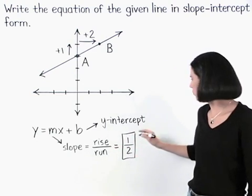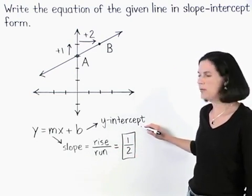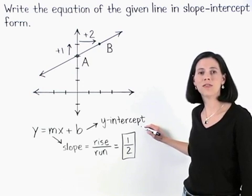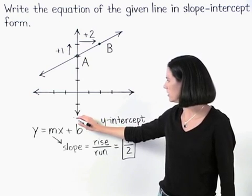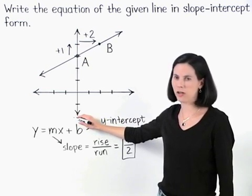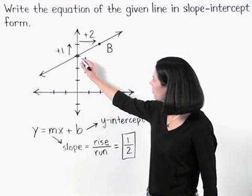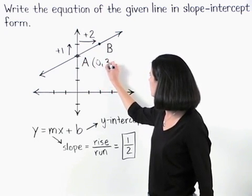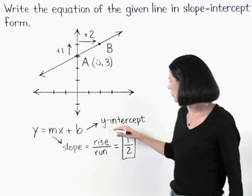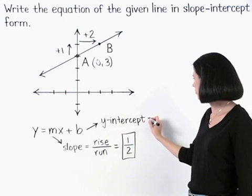Next, to find the y-intercept, remember that the y-intercept is the point where the line crosses the y-axis. And notice that our line crosses the y-axis at the point (0, 3), which means that the y-intercept is three.